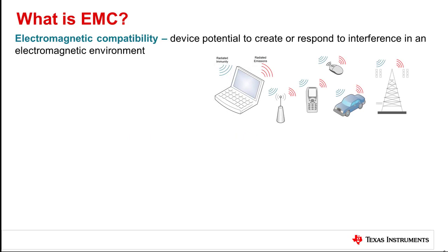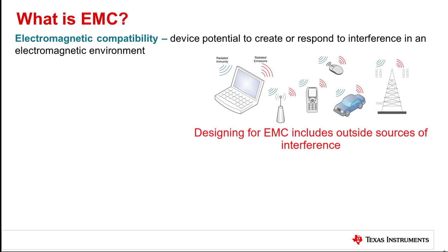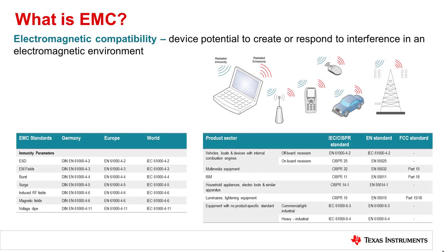All electronics produce some level of electromagnetic field when operating, which can cause interference in the operation of other electronics. There are many potential sources of electromagnetic compatibility issues including power lines, electronic circuits, cell phone transmissions, electric motors, and even component-to-component interactions within single circuit designs. Because there are so many sources of electromagnetic energy, regulatory boards have established standards of compliance for all electronics to minimize risk of interference.